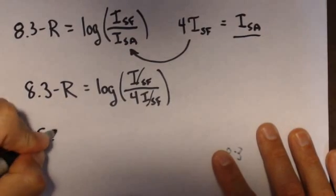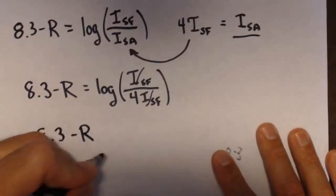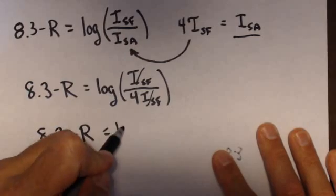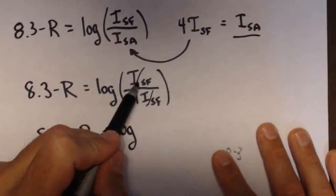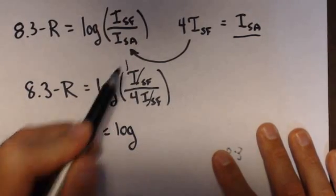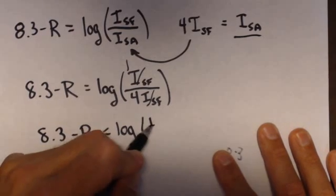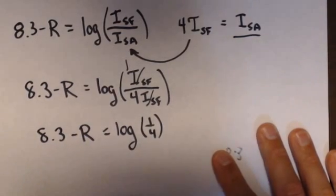And so, we get that 8.3 minus R equals the log. Now, remember, this cancels, but that means there's still something there. It's going to cancel and leave a one. Log of one-fourth.